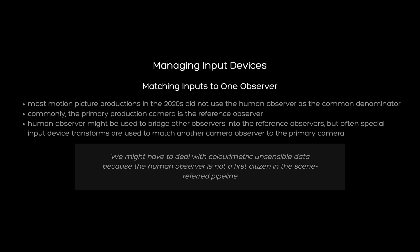We can fix the shot better using a simple matrix-based IDT and a custom gamut compression designed specifically for this scene, locally maintaining RGB ratios. A custom-designed compression will always be superior to a generic non-linear compression. Most motion picture productions use the main production camera as the reference observer. The reason is that most motion picture cameras do not meet the Luther-Ives condition.